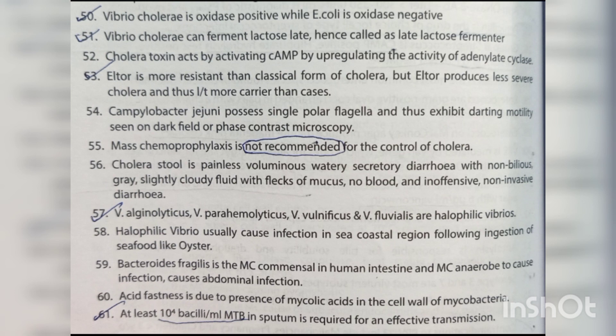Mass chemoprophylaxis is not recommended for the control of cholera. Cholera stools present as painless, voluminous, watery secretory diarrhea — non-bilious, gray, slightly cloudy fluid with flecks of mucus, no blood, and non-invasive. Vibrio alginolyticus, V. parahaemolyticus, V. vulnificus, and V. fluvialis are halophilic vibrios that usually cause infection in sea coastal regions following ingestion of seafood like oysters. Bacteroides fragilis is the most common anaerobe in the human intestine and most common anaerobe to cause abdominal infections.